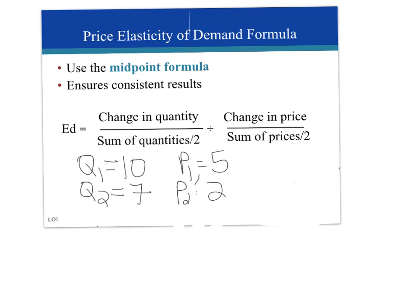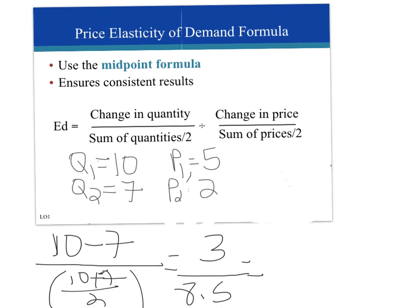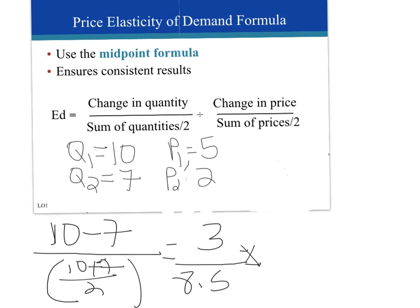The percentage change in quantity using the midpoint formula would be: 10 minus 7 divided by (10 plus 7) divided by 2. This gives us 3 divided by 8.5. Then 3 divided by 8.5 gives us 0.353, and multiplied by 100 we get 35.3%.